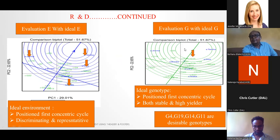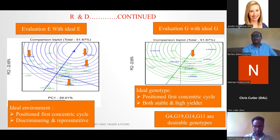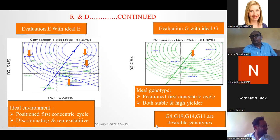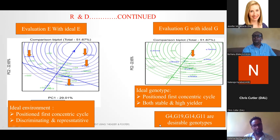This graph shows the evaluation of genotypes with the ideal genotype. Genotype 10 is the ideal genotype — it is positioned on the first concentric circle and is stable with high yield. Some genotypes are also desirable, like genotype 4, genotype 9, genotype 40, and genotype 11, as they are near the ideal genotype with high yield benefits.